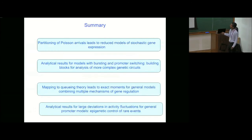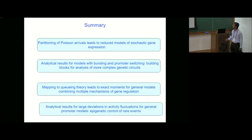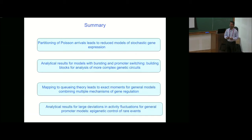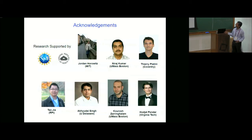Let me conclude with a summary. I showed you how partitioning of Poisson arrivals leads to tractable stochastic models. Mapping to queuing theory leads to exact moments for general arrival time distributions. And finally, we've obtained analytical results for large deviations in activity fluctuations for a very general class of models. This can be used to analyze how epigenetic changes control rare events in gene expression. The large deviation work was done largely in collaboration with Jordan Horowitz, and the earlier work was done in collaboration with Neeraj Kumar and Thierry Platini. Thank you for your attention and I'll be happy to take any questions.